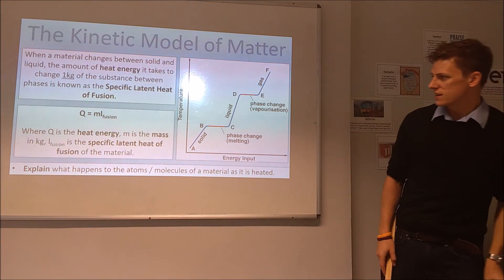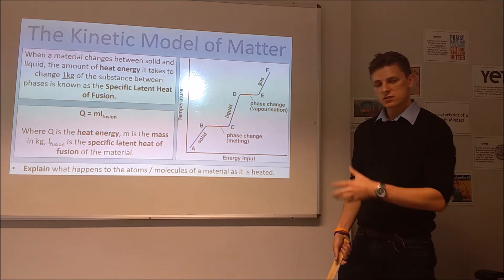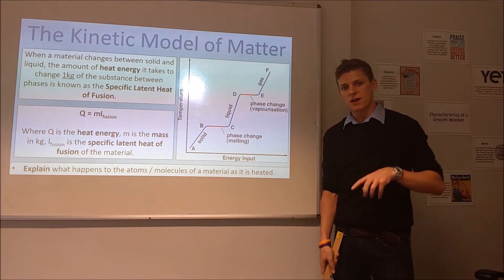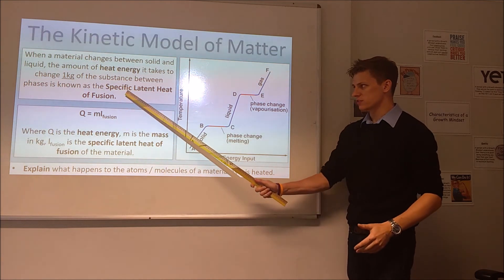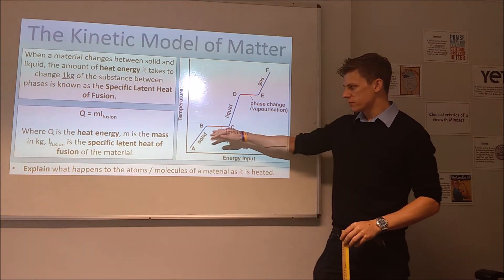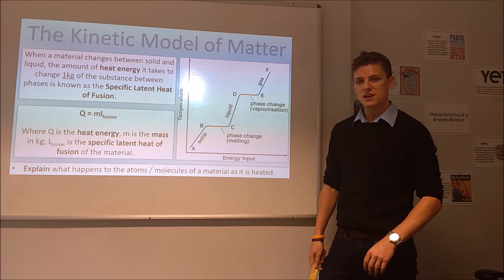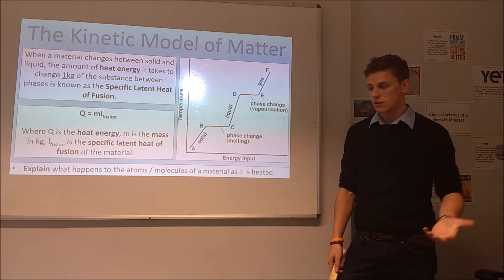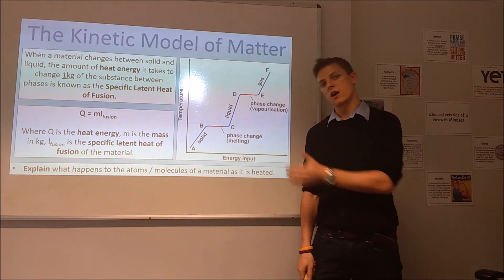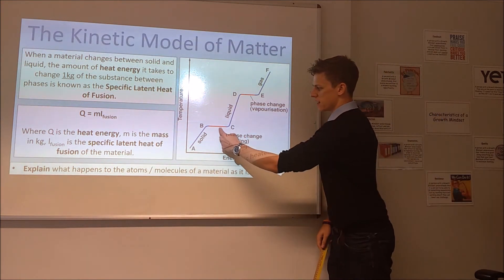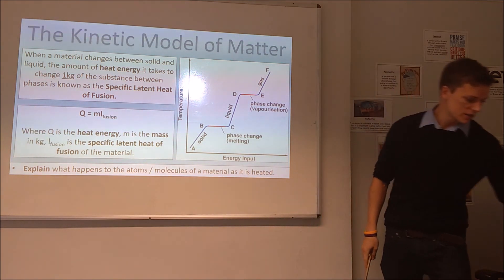Looking at the other phases, we'll first focus on the change between solid and liquid. During that point, it takes a fixed amount of thermal energy to turn one kilogram of that material from one phase to another — that's called the specific latent heat of fusion, for this melting boundary. We get an equation where the thermal energy required per kilogram of the material is given the symbol L with a subscript of fusion to distinguish it. The more of a substance you have, the more energy it takes to change phase.